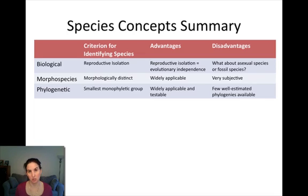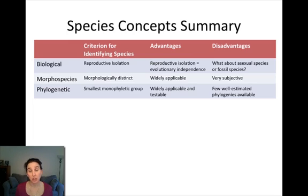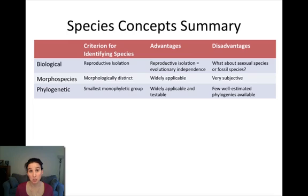The last species concept is the phylogenetic species concept. Species are defined as the smallest monophyletic group, and that monophyletic group of organisms shares derived characteristics. The species concept is widely applicable, but the main problem is that there aren't a lot of phylogenetic trees constructed for groups of organisms. We're working on it, but it becomes hard to identify species without a phylogeny.